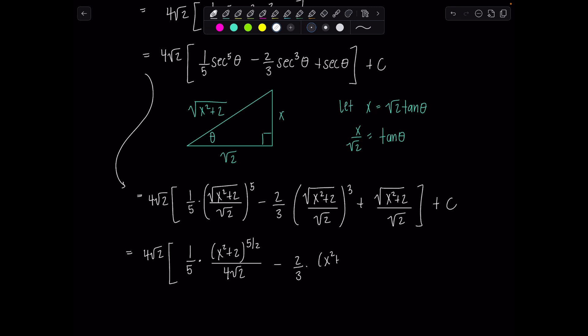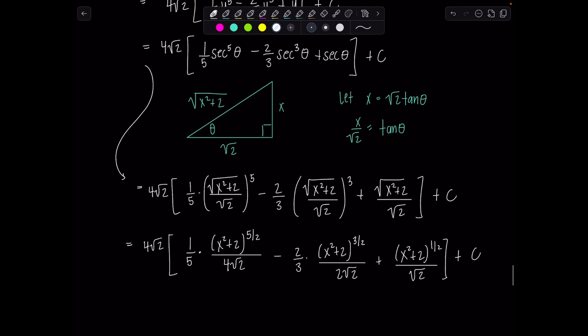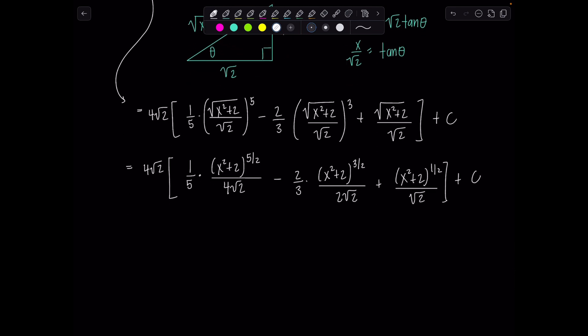And then over rad two to the fifth. Remember, that's four rad two minus two thirds times. Up top, we'll have x squared plus two to the three halves. Rad two cubed is two rad two plus. And then just to make it all matchy matchy. I'll write this as x squared plus two to the one half. Why would I leave him with the square root if nobody else has a radical? That would be weird. I don't know if you guys watched Sesame Street when you were younger, one of these is not like the other. We don't want him to be not like the others.